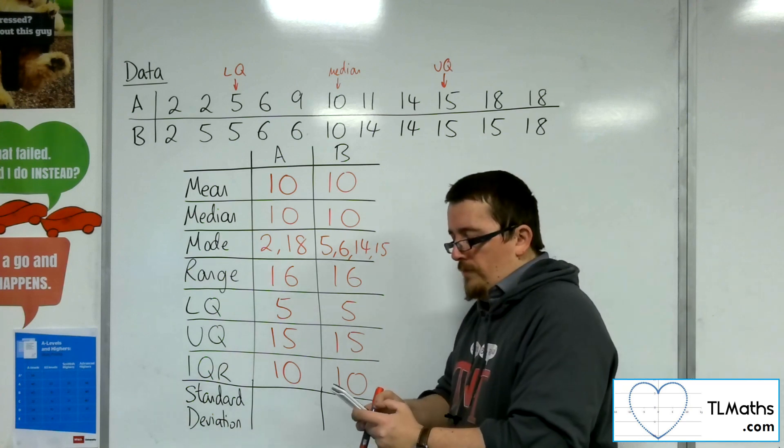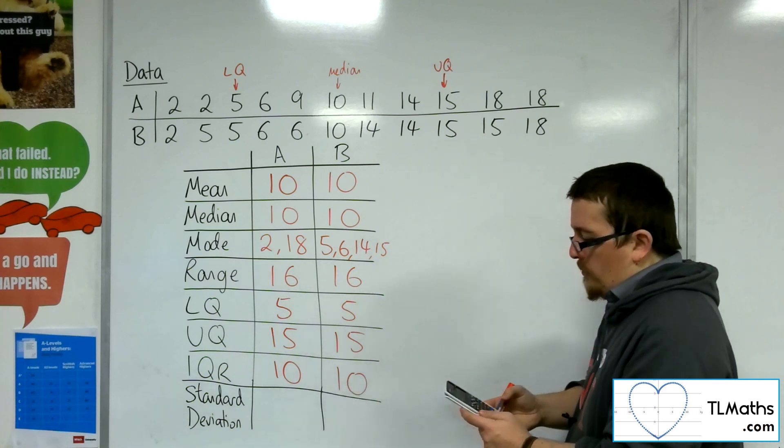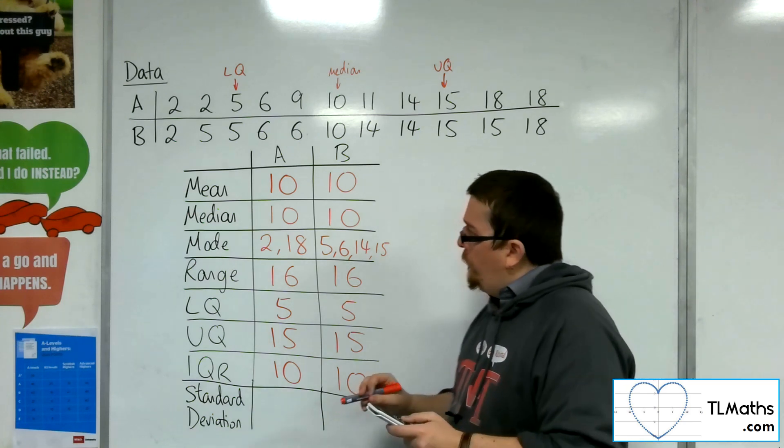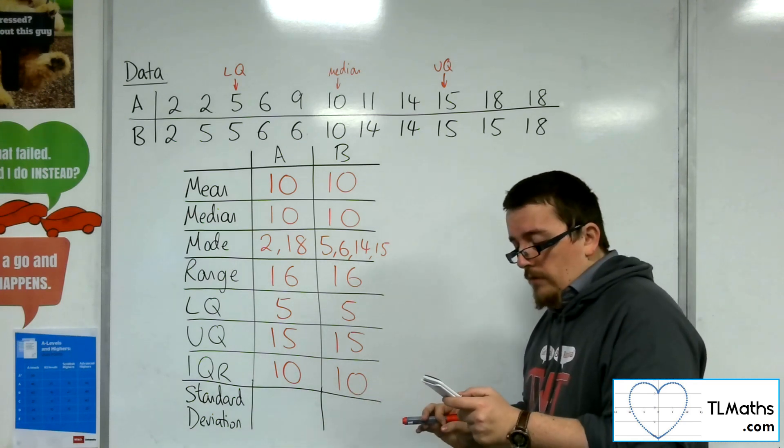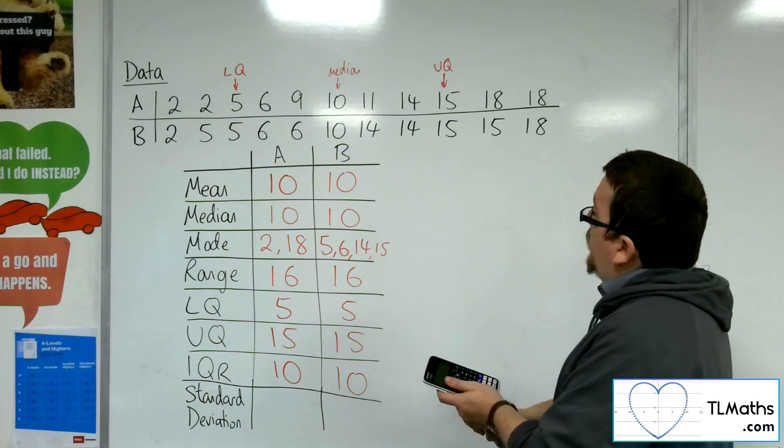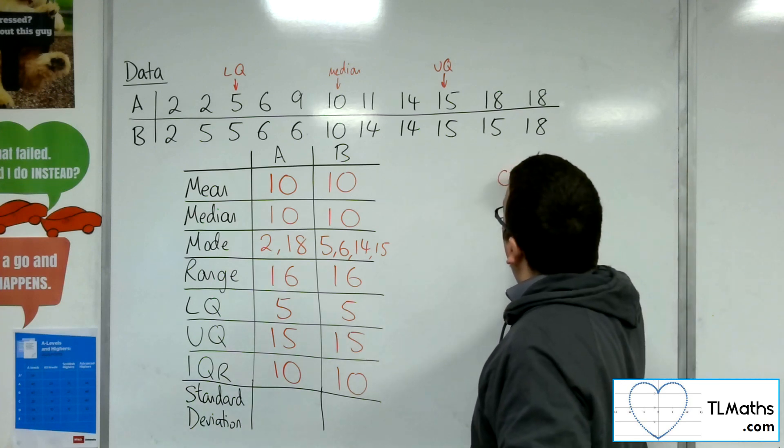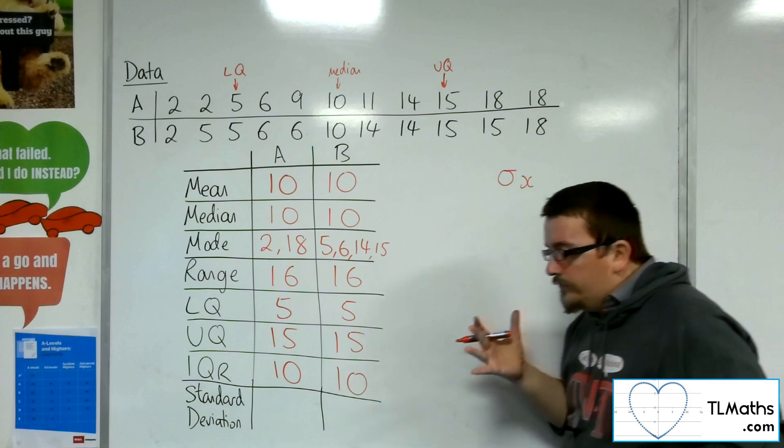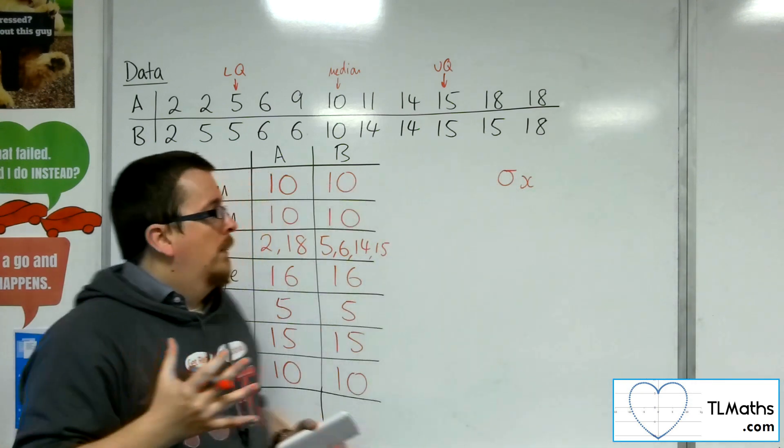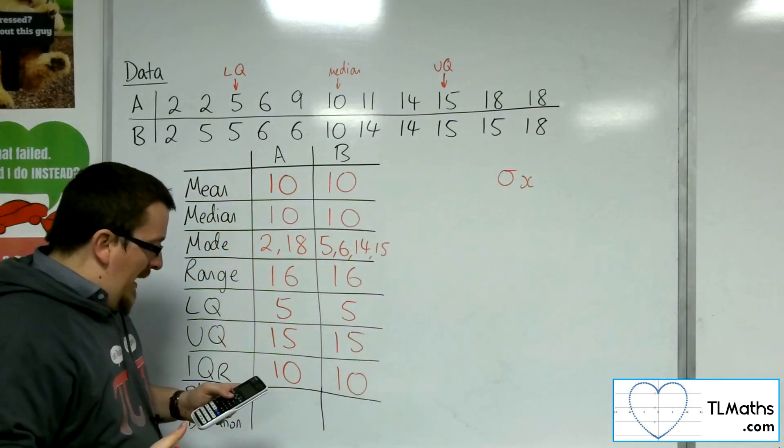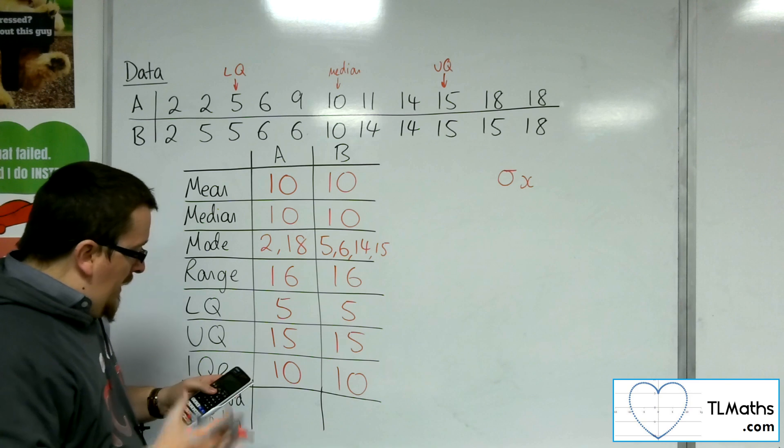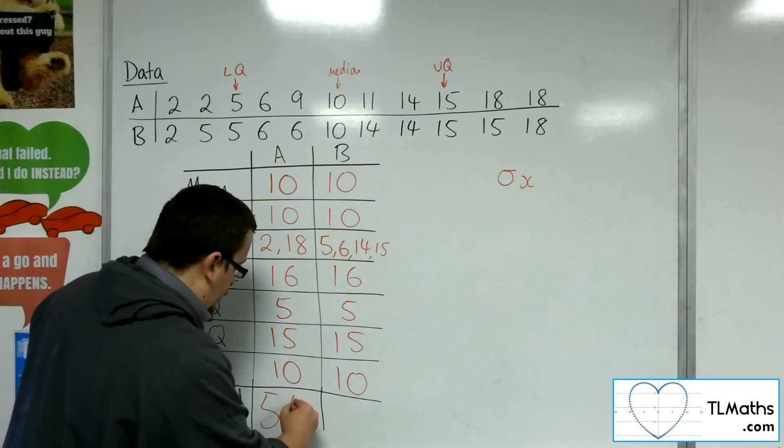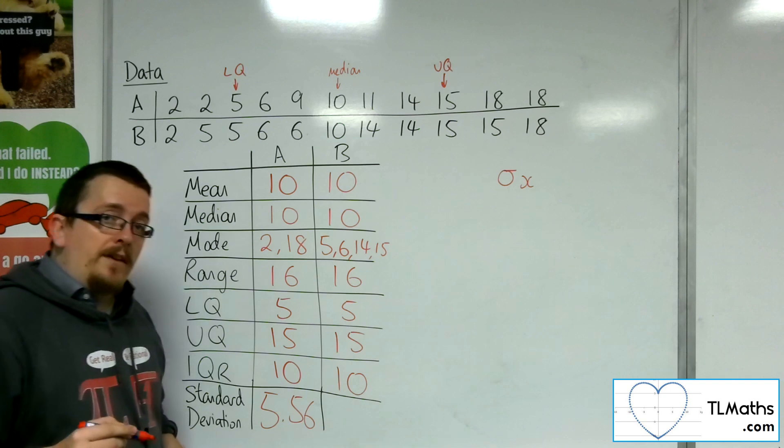So then go to option, and then number 3 for one variable calculations. And what you're looking for, for the standard deviation, is the sigma x. Now the sigma x that we have there is, in this case, 5.56 to 3 significant figures.